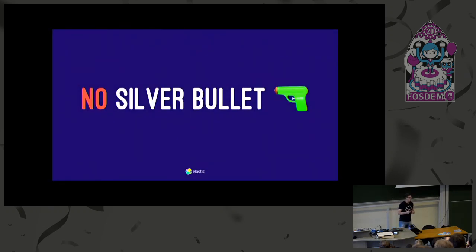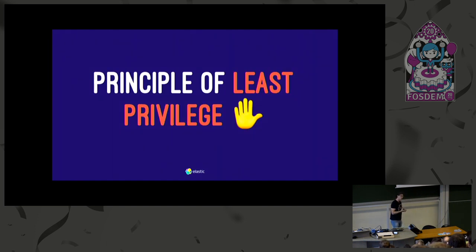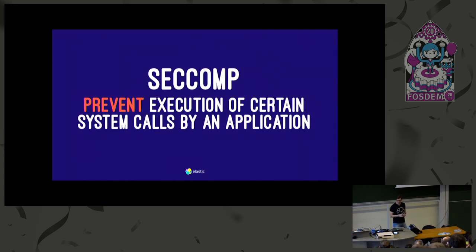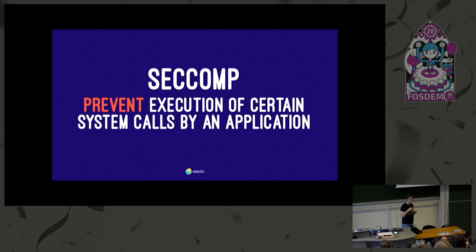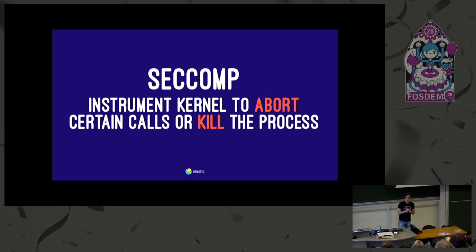Obviously, there are no silver bullets, and there is no one tool that you want — you want more layers and an in-depth security model. And SecComp is exactly what comes into play here. Generally, it's just one piece of least privilege security — trying to take away things that you don't actually need that might expose you to more risk. It basically just blocks certain system calls that you know your applications do not need. So if you know your process never needs to fork another process or call another binary, why not just take away that possibility? So even if you have a remote code execution and somebody can run whatever they want in the context of your application, you still cannot do some stuff that's just not necessary for your application. That's really just the idea of SecComp — instrumenting the kernel to do that for you.